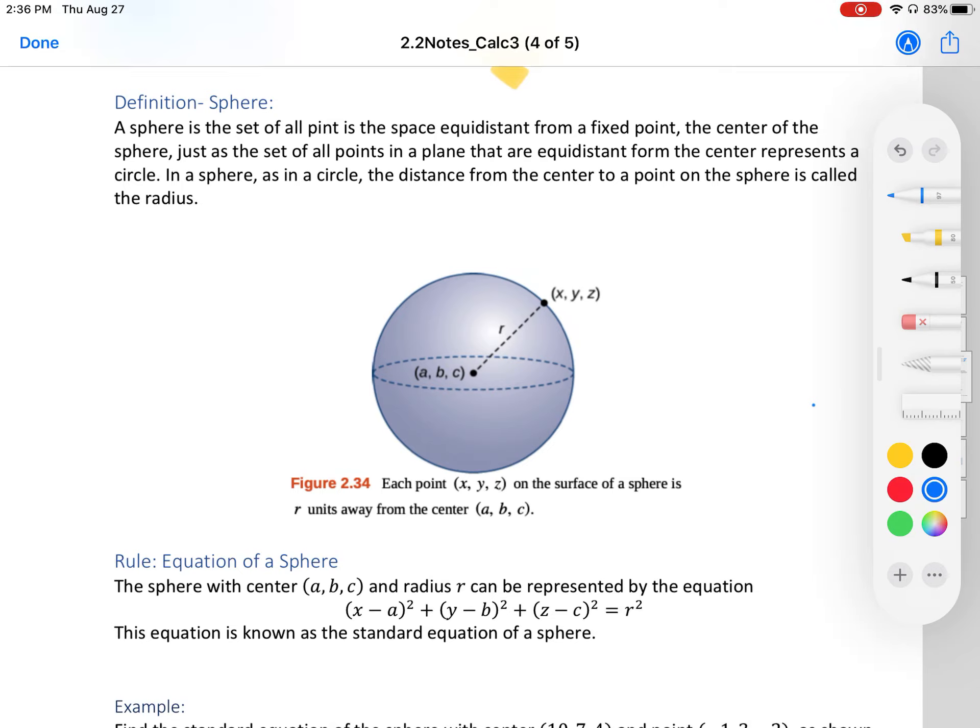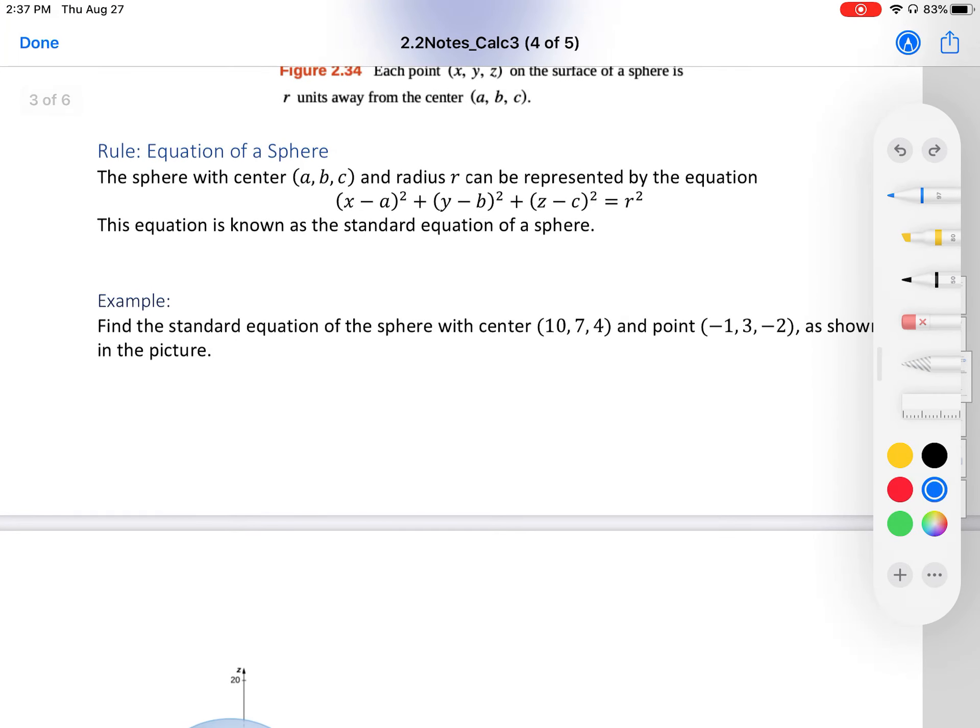Definition of a sphere: A sphere is a set of all points in space equidistant from a fixed point, the center of the sphere, just as the set of all points in a plane that are equidistant from a point represents a circle. In a sphere, as in a circle, the distance from the center to a point of the sphere is called the radius. Similar definition to a circle, it's just now in 3D. The standard equation of a sphere with center (a, b, c) and radius r is (x - a)² + (y - b)² + (z - c)² = r².